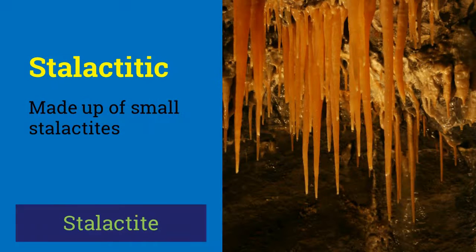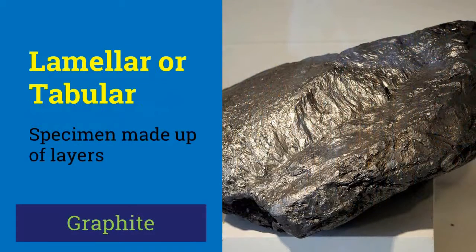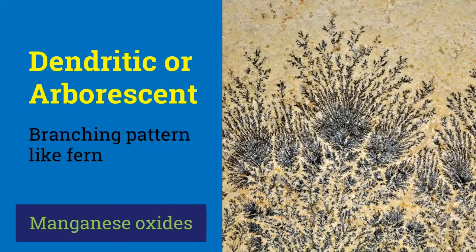A mineral made up of small stalactites which are conical or cylindrical in form has stalactitic habit. The specimen which is made up of layers like leaves in a book is said to have laminar habit, as it is in graphite and molybdenite.